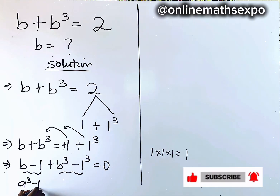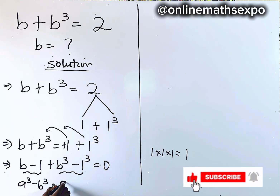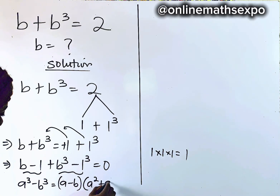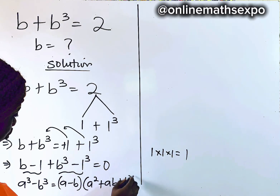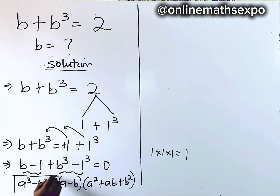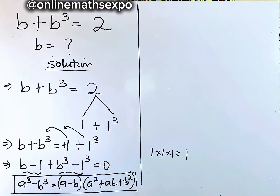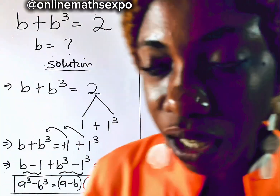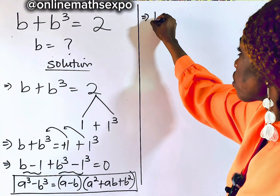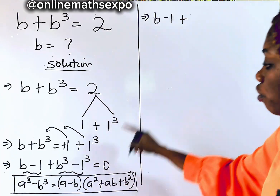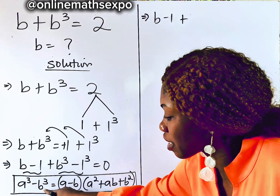The identity is a³ − b³ = (a − b)(a² + ab + b²). This is our algebraic identity and we are going to apply it to help us solve the equation.